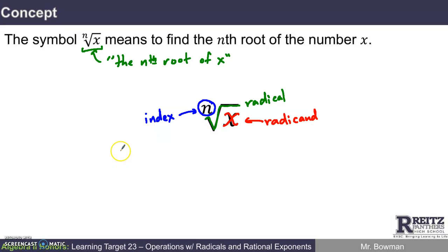The index essentially tells you what root you're seeking. It's important for you to know that if there is no index shown, you are to assume that n is 2. Assume n equals 2. Essentially what we're saying here is that if I give you a radical with no index written, it's a square root, it's a second root.